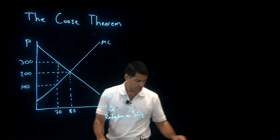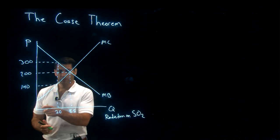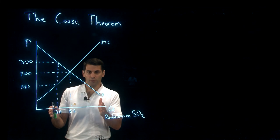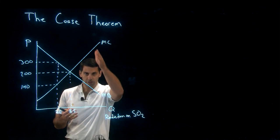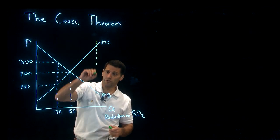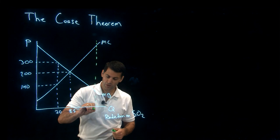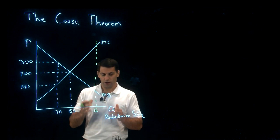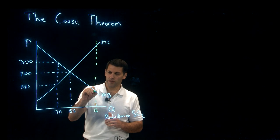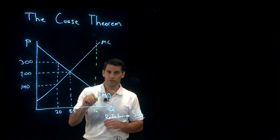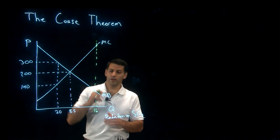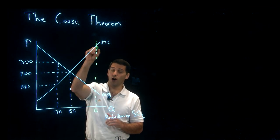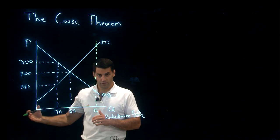Why isn't the efficient level of pollution zero? If the total amount of pollution were, say, 16 million tons, why not abate all of it? If you look at the graph, the marginal benefit to society of cleaning up that last unit — eliminating that last unit of sulfur dioxide — is much, much lower than the cost of reducing that sulfur dioxide.